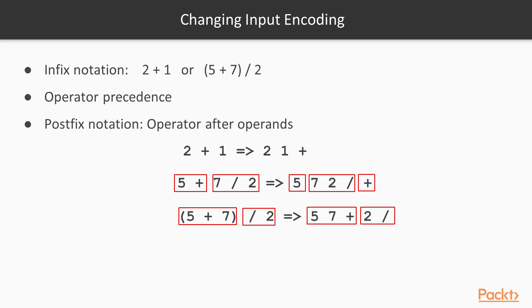We are all used to what is known as the infix notation. In this notation, the operator is in between the operands, such as 2 plus 1, or the more complex expression 5 plus 7 in brackets, division by 2. In this notation, we have to handle operator precedence. For example, we should calculate the multiplication before a subtraction. This operator precedence makes everything far more complicated to compute.